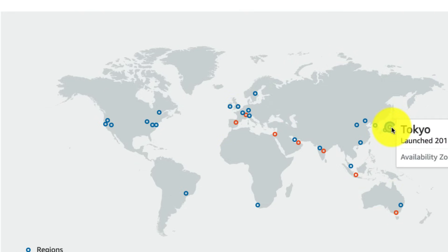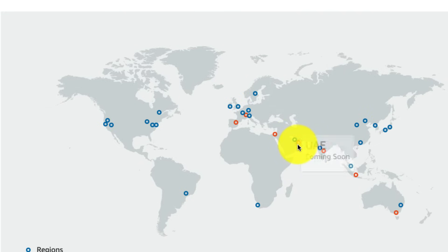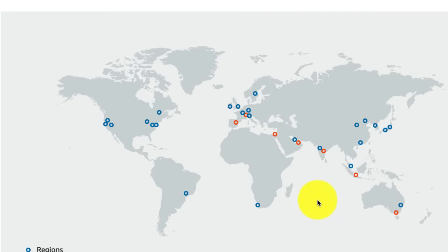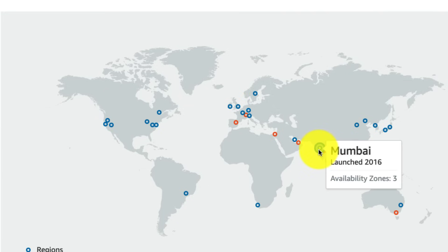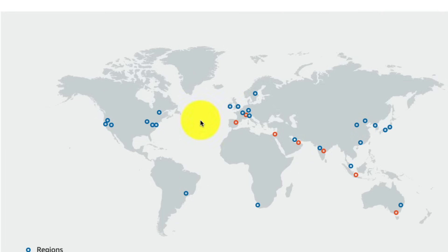AWS has a region in Tokyo. In the Middle East, Bahrain is available and UAE is coming soon. In India, AWS has a region in Mumbai, and a region in Hyderabad is coming soon.